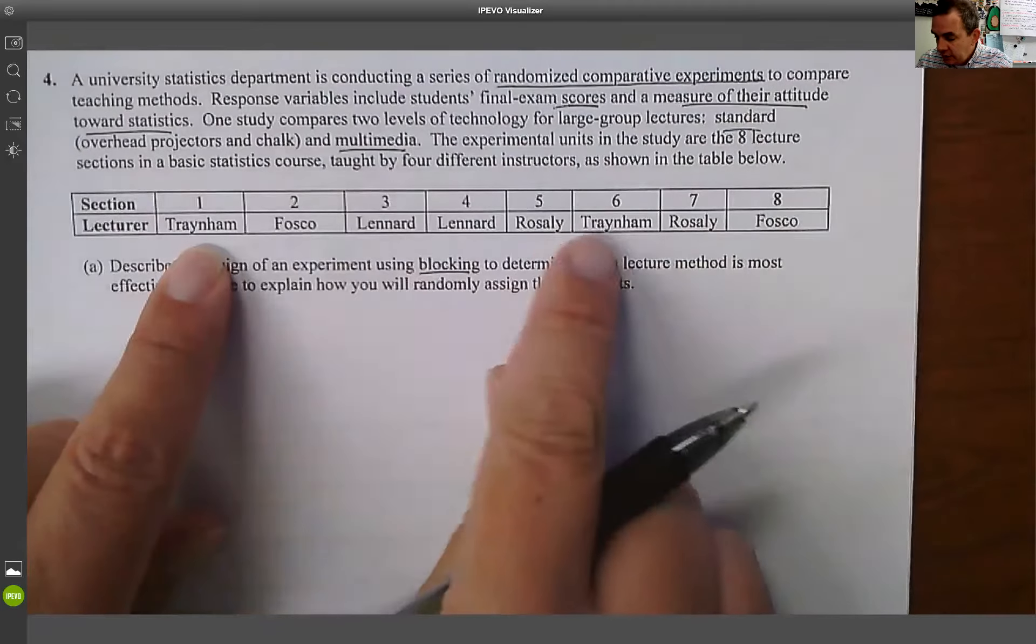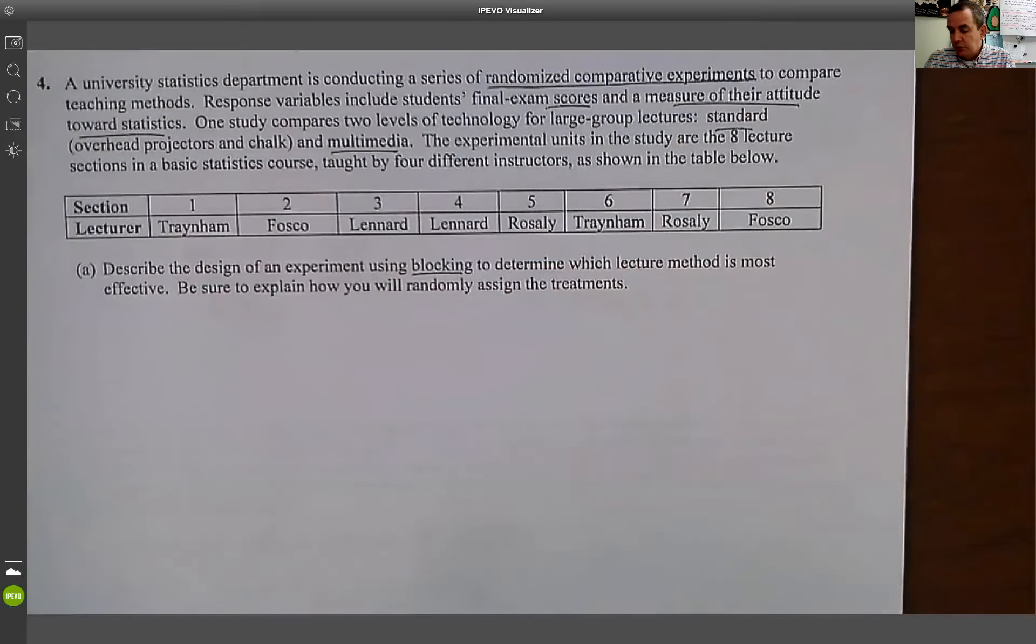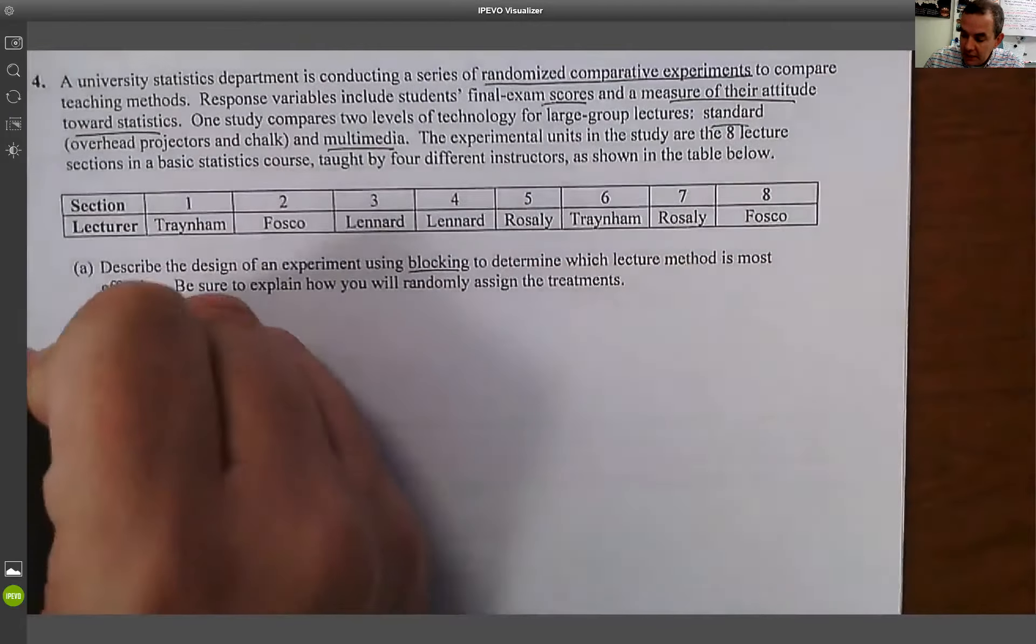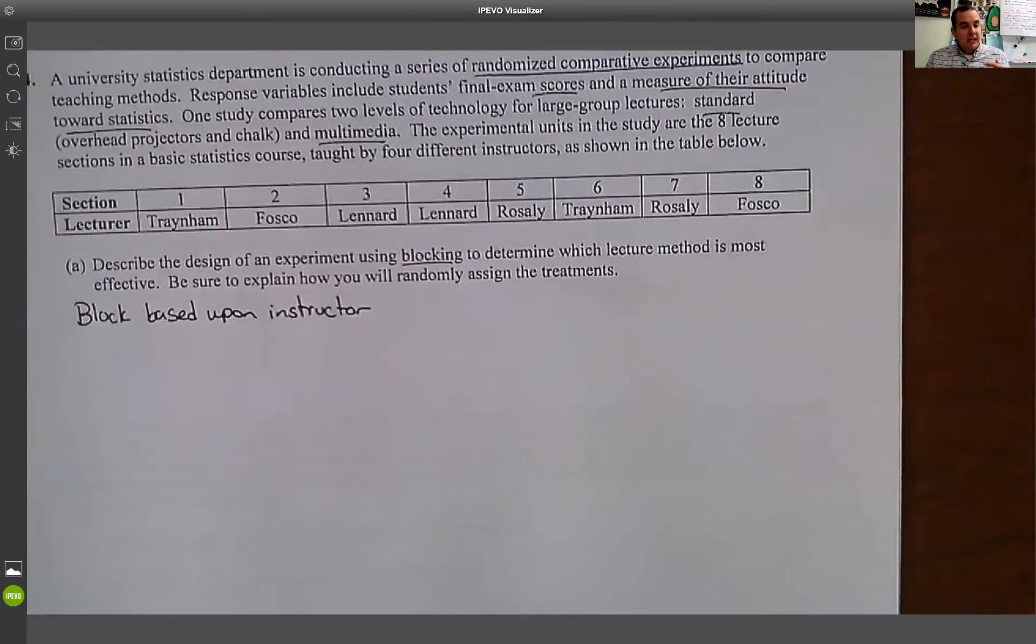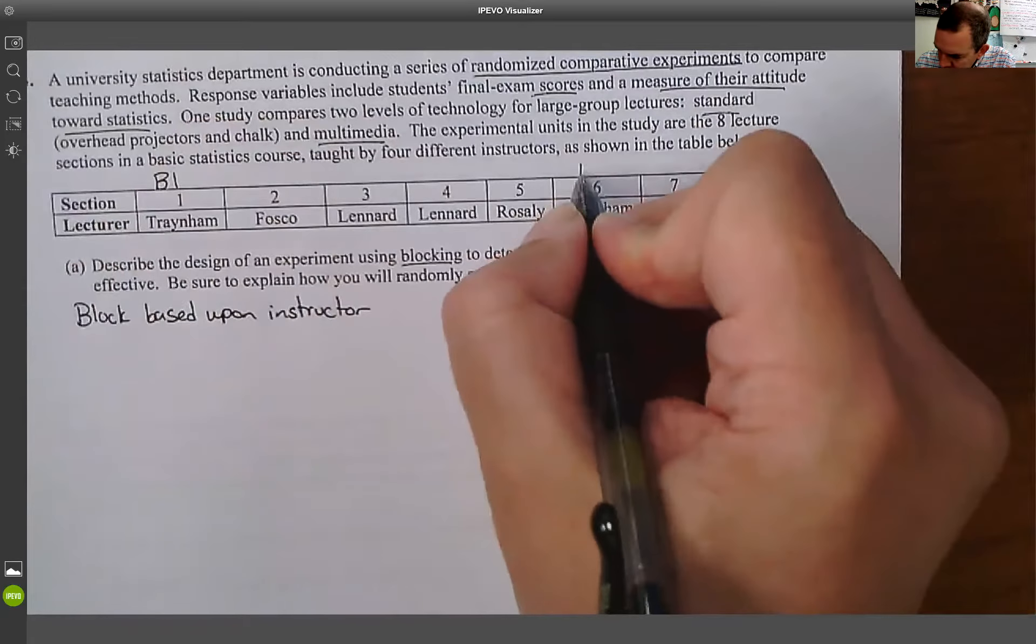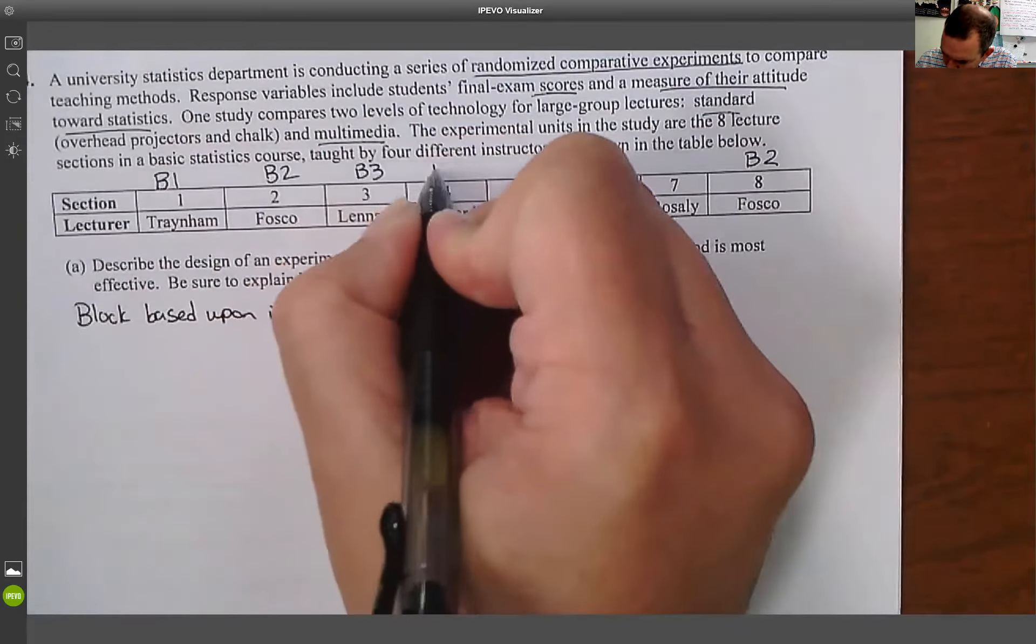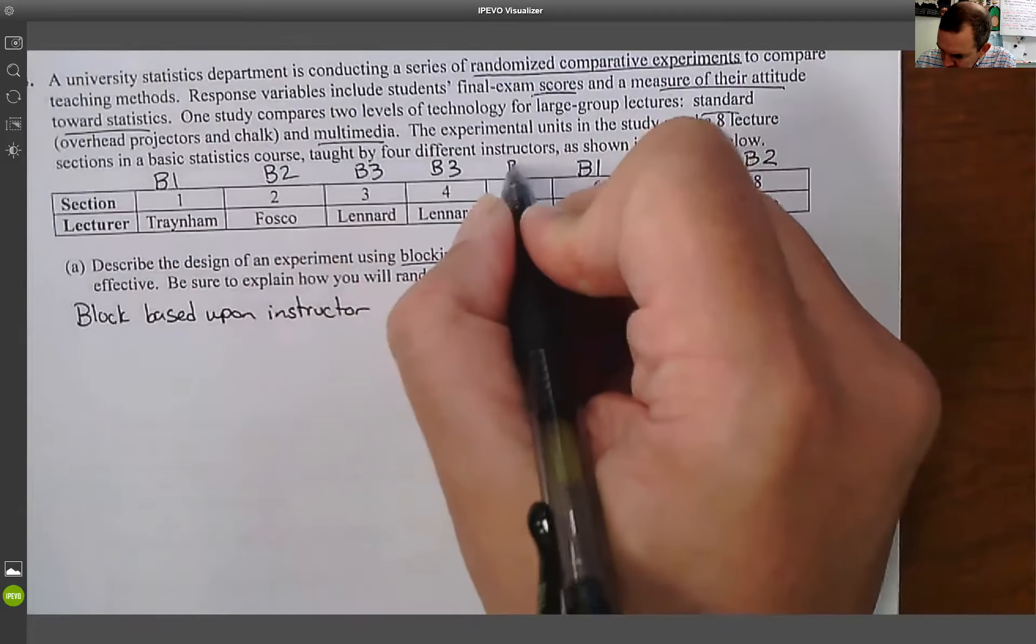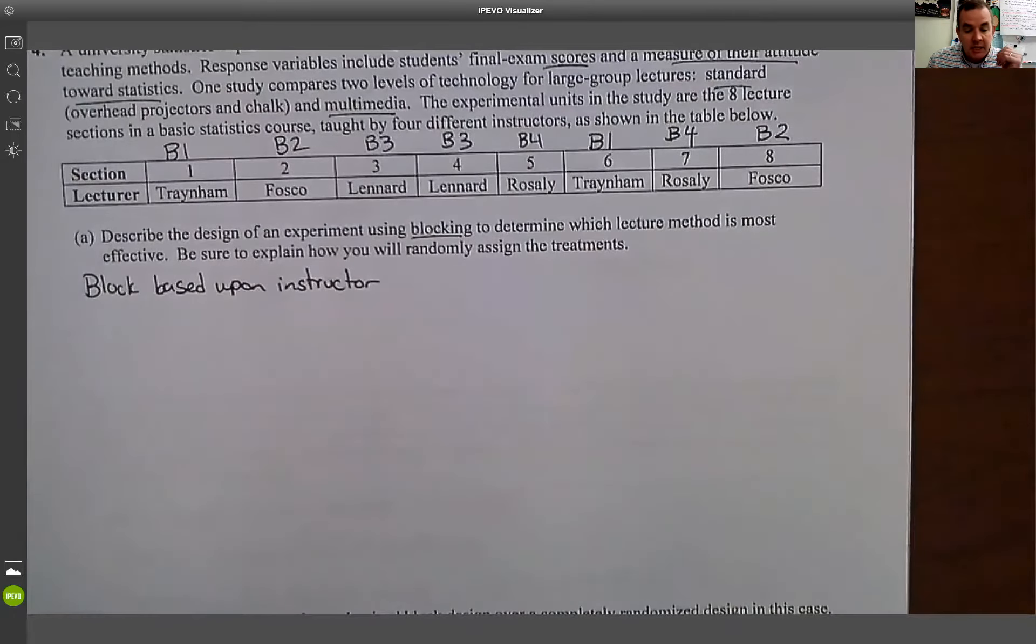So in this case, the really easy way on this one is we're going to treat each teacher as a separate block. What we're going to do is because teaching styles can vary. Traynum could have been teaching this class for 25 years and been pretty solid in this, and Fosco could maybe be in their first year teaching it. So the teaching ability is something that we need to control for. So in this case, what I'd want to do is I'd want to block based on instructor. So basically, what's going to happen is I'm going to block based upon instructor. So what I mean is each instructor is going to be their own block. And if you think about it, Traynum is going to be block one, Fosco is going to be block two, Lennard is going to be block three, and Rosalie is going to be block four.